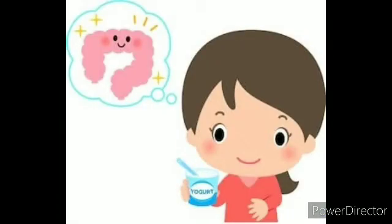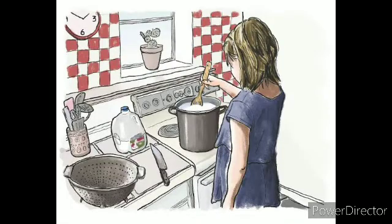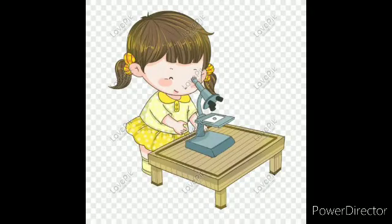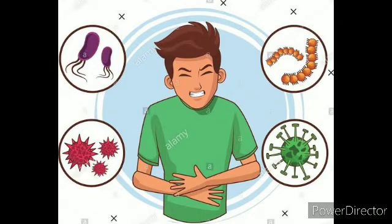Most of you children like to eat curd. You must have seen mummy making curd at home, and you know curd is made from milk. But how is it that milk turns into curd? If you take a bit of curd on a glass slide and place it under a microscope, you will see very tiny living things in it. Yes, these are microorganisms, and it is these microorganisms that convert milk into curd — so they are useful for us. But not all microorganisms are useful. When harmful ones enter our body, we fall sick. These are called harmful microorganisms.